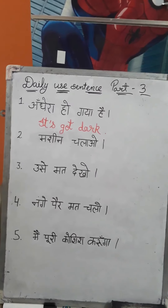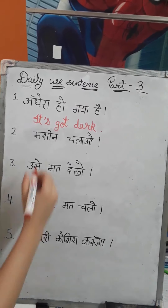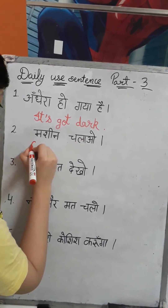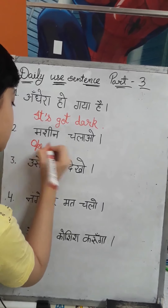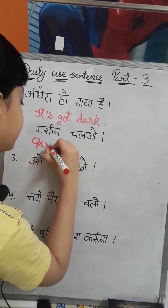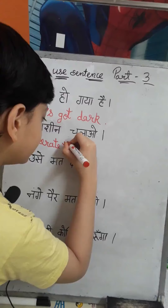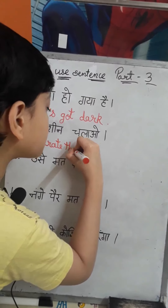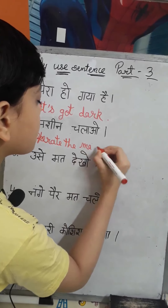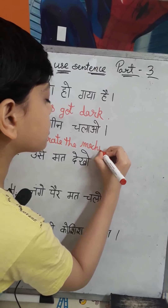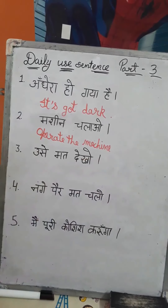So my second sentence is: Machine chalao. We will write it in English like: Operate the machine. One more time — Operate the machine.